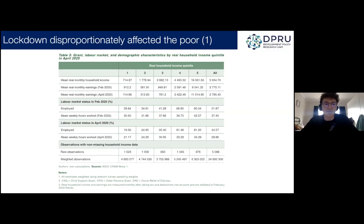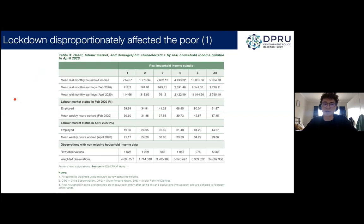There's a reason why we only focus on the employed rather than comparing unemployment across February and April. Because of the way the labour market questions for February were asked relative to April, there are some distinct differences. The researchers weren't comfortable making comparisons between the unemployed in February versus April, mainly because in February we can't distinguish between the discouraged and the narrowly unemployed.